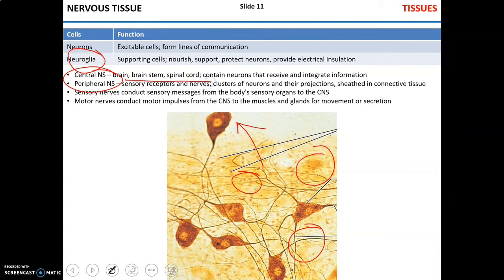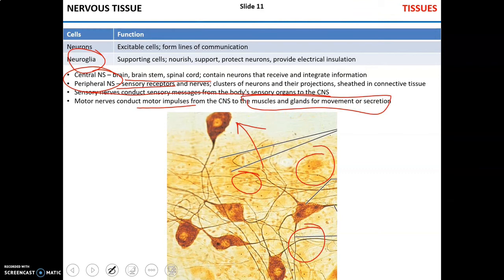Nervous tissue can be found in the central and peripheral nervous systems. The central nervous system — brain, brainstem, spinal cord — neurons here integrate information after they receive it. In the peripheral nervous system, there are sensory receptors like mechanoreceptors and touch receptors in the skin, and nerves that communicate signals. Sensory nerves communicate sensory messages from sensory receptors to the CNS, while motor nerves communicate motor impulses from the CNS — brain and spinal cord — to the muscles and glands, producing effects like movement or secretion.